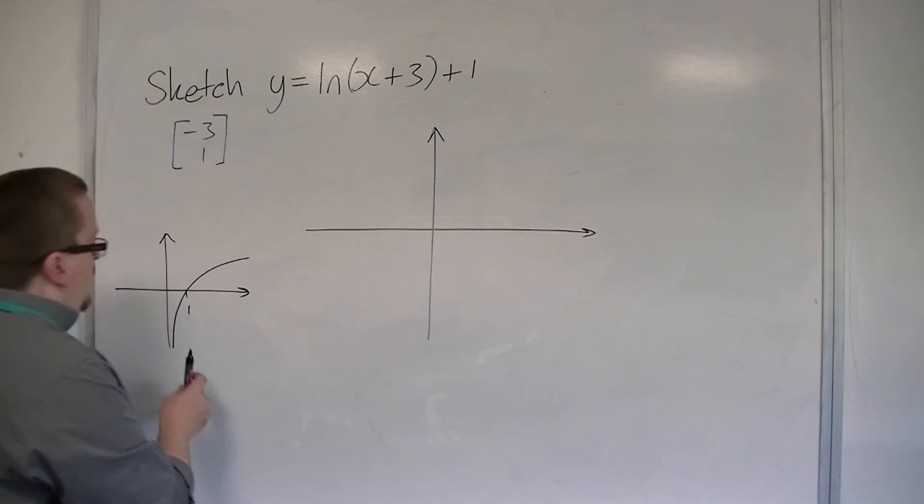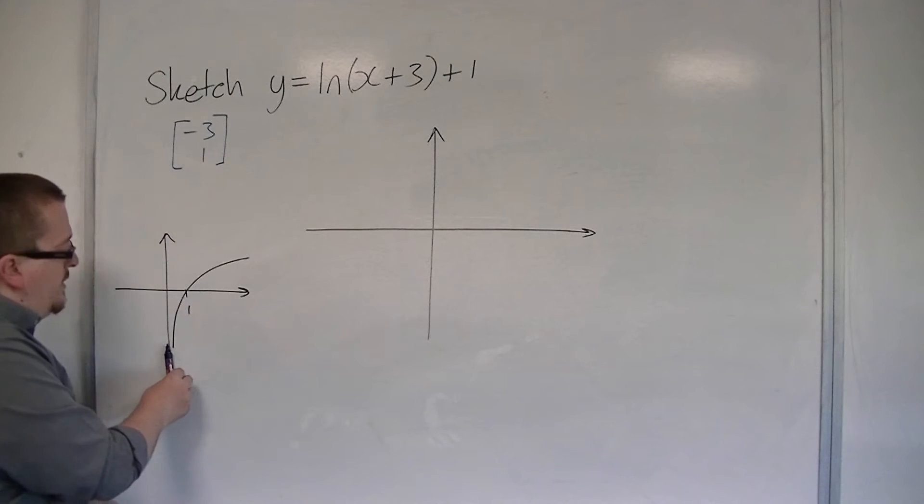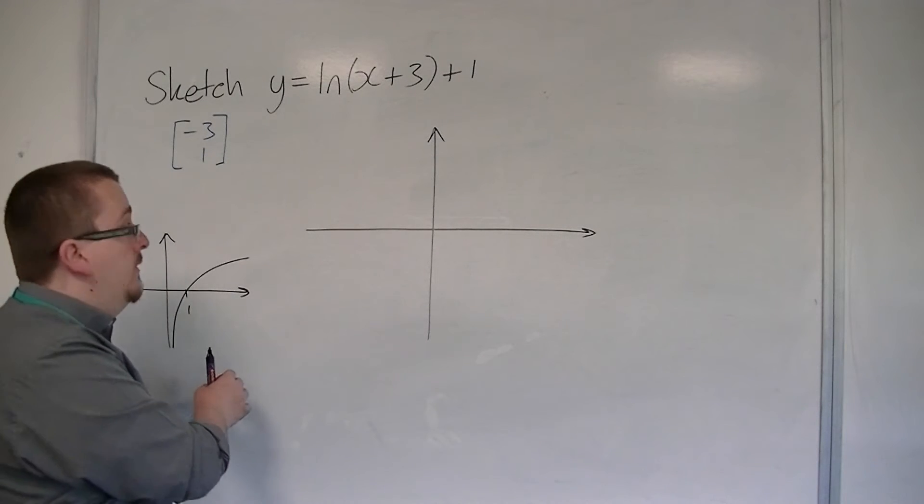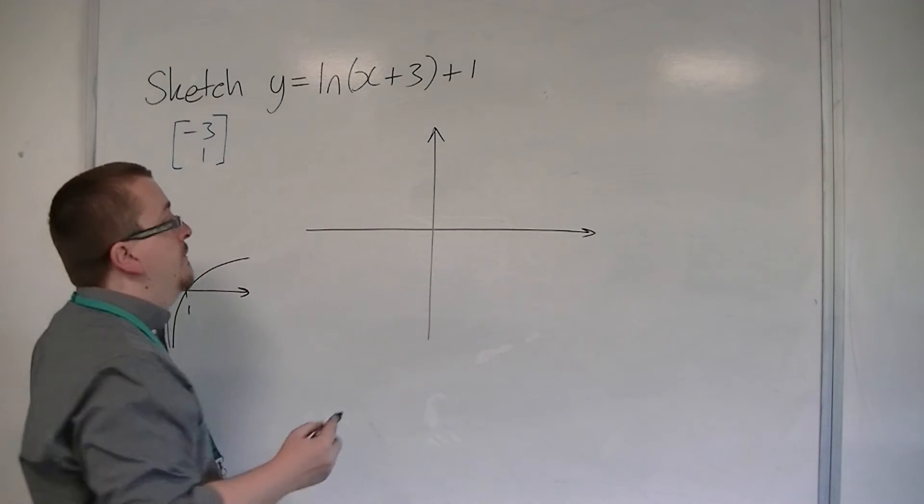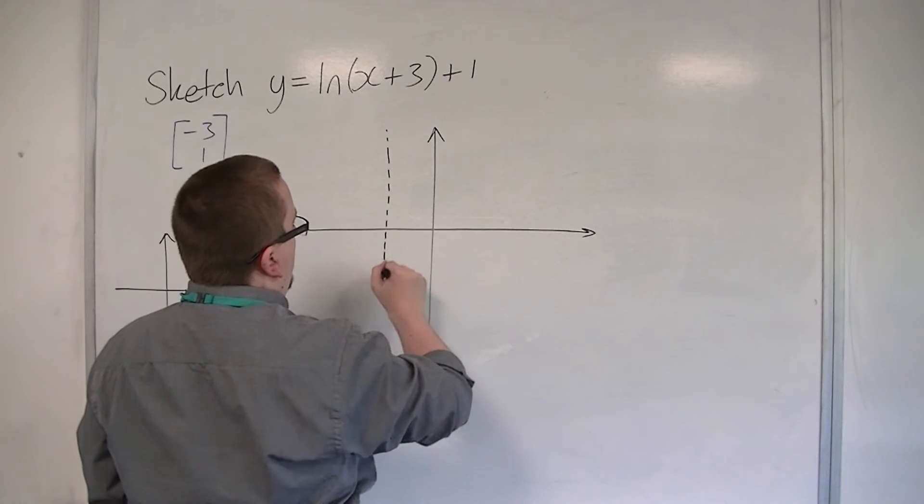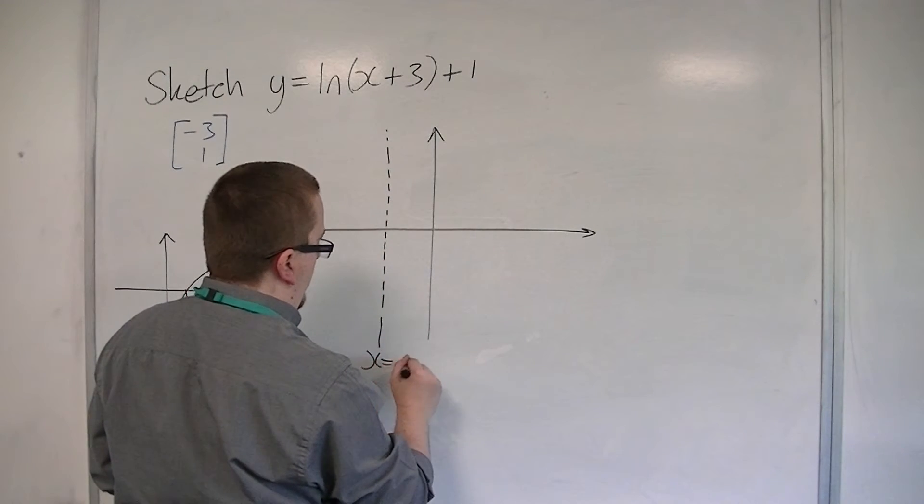So this originally has an asymptote at x is 0, the y-axis. So the asymptote will also move 3 places to the left. And so there is an asymptote now at x is equal to minus 3.